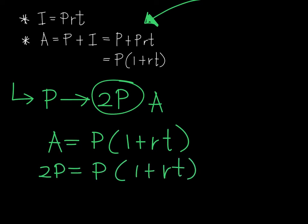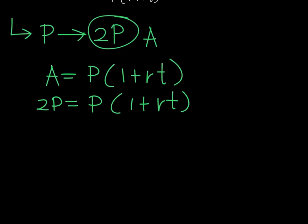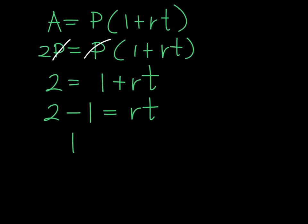And immediately, you will see that with this setup, the P will cancel with the other P. And the equation becomes 2 is equal to 1 plus RT. And if you continue, this is 2 minus 1 equals RT, and 1 is equal to R times T.